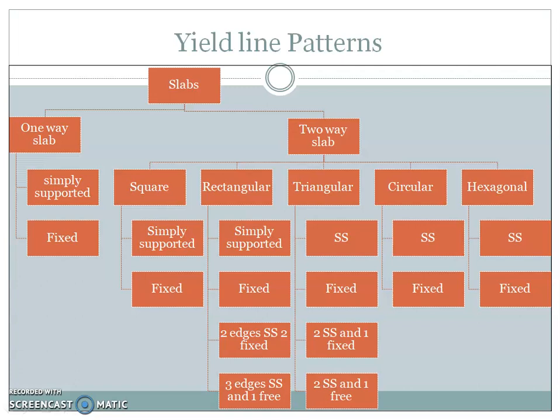In a one-way slab, deflection in the other direction is not absent but is very small compared to the main direction. So in a one-way slab, we have simply supported and fixed slabs. For two-way slabs, different geometrical shapes are considered: square, rectangular, triangular, circular, and hexagonal. We are going to learn yield line patterns for all these five types of two-way slabs and one-way slabs.